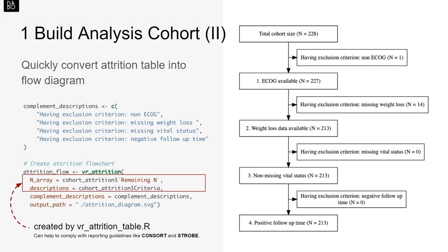You might also want to show this in the form of a flowchart — the attrition diagram, which is a very typical visualization. Again, this takes very little code. You can create a vector of complement descriptions and reuse the outputs from the previous chunk of code. Using the VR_attrition function, you can plot a nicely formatted attrition diagram showing at each step how many patients have been kept and excluded. This figure shows up in many real-world data analysis papers, and this type of package can help us better comply with reporting guidelines like CONSORT and STROBE.